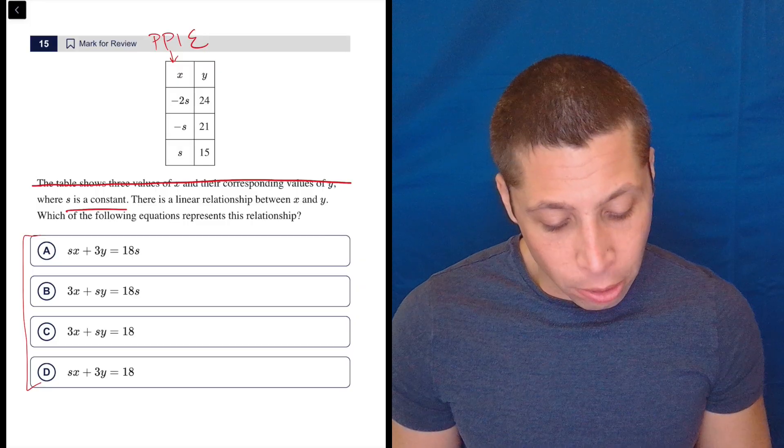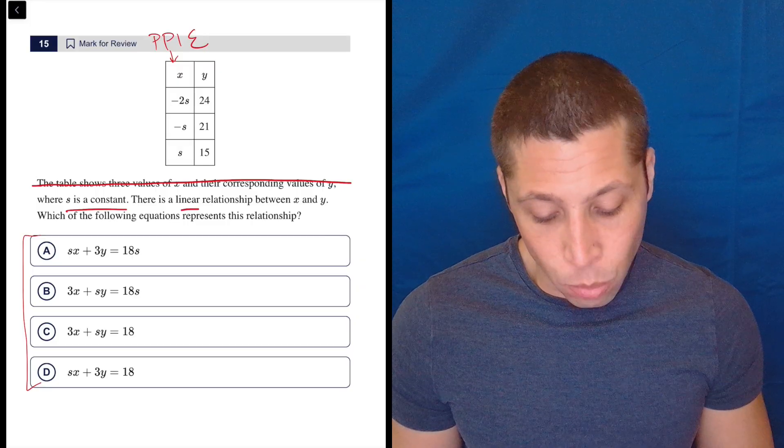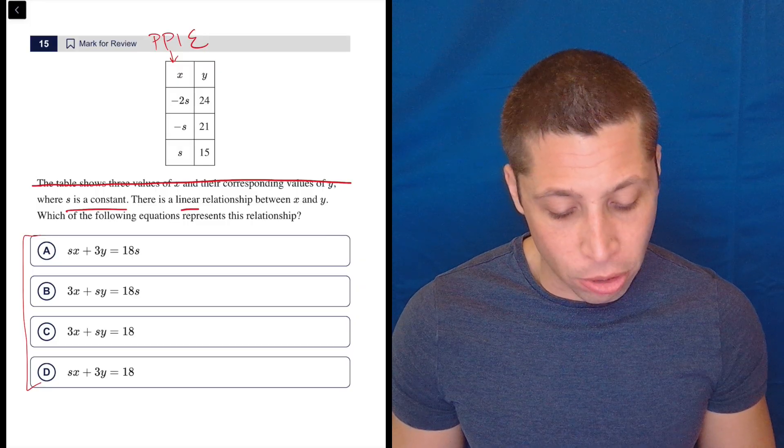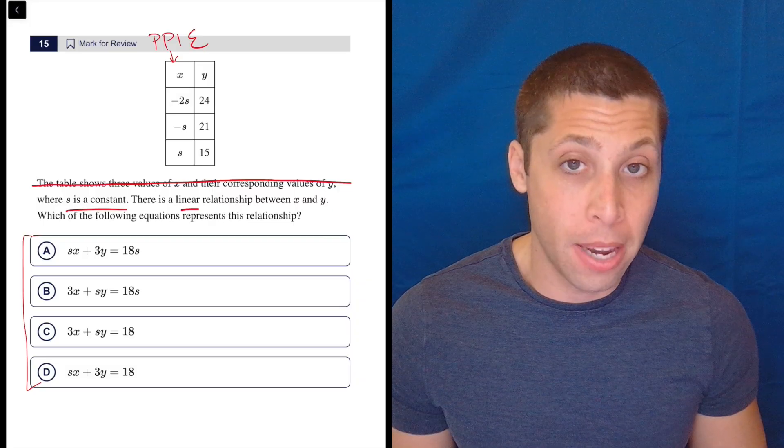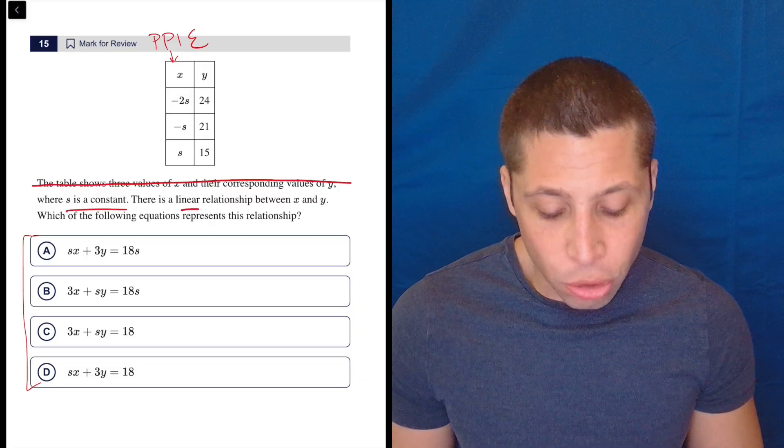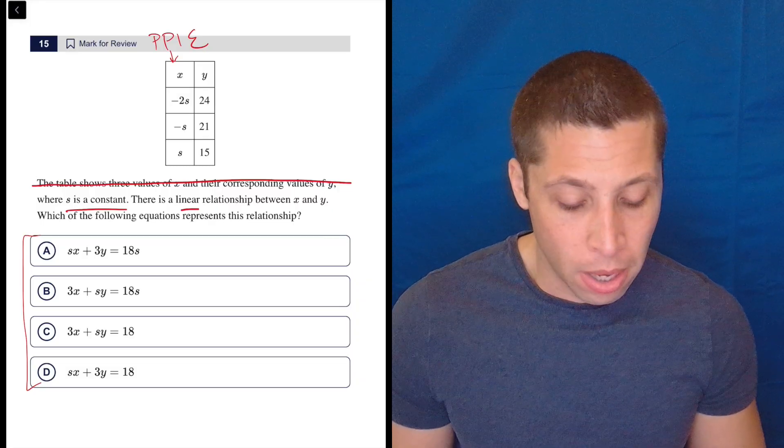Where s is a constant. There is a linear relationship between x and y, which of the following equations represents this relationship? Well, I don't need to write a y equals mx plus b here because all of these choices are linear relationships. So, plug points into equations.